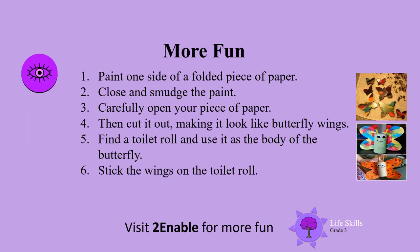Lots more fun to have. You can make your own butterfly. Find a piece of paper and paint one side of a folded piece of paper — don't forget to fold it first. Then find some paint; even if you have to add a little bit of soil, different kinds of soils, to make a nice colour of paint. Then you paint one side of your folded piece of paper and you smudge the paint. Carefully open your piece of paper — you will see the paint is on both sides. Then cut it out, making it look like butterfly wings. Then you can find a toilet roll and use it for the body of your butterfly. Then stick on the wings.